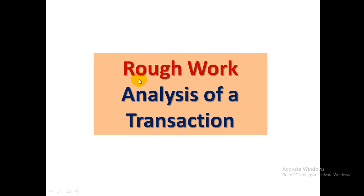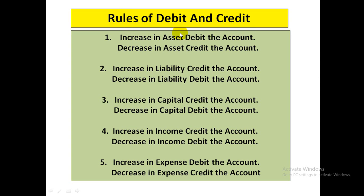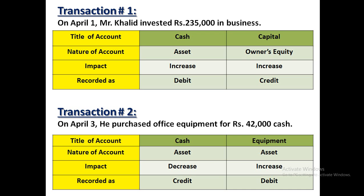Let's review the rules of debit and credit that you have to learn. An account is recorded in debit if it is an asset that is increasing. Liability, capital, income, and expense — sab ke increase or decrease ke alag rules hain. In rules ko apply karke hum transactions ko general journal me record karte hain. Rough work dekhenge pehle, phir general journal me entry ki positioning dekhenge.